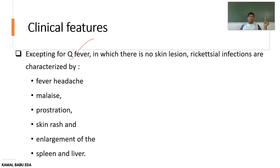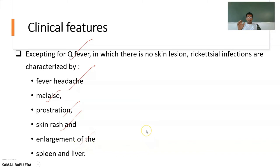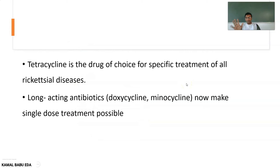Coming to the clinical features, for Q fever there will be no skin lesion. Rickettsial infections are mostly characterized by fever, headache, malaise, prostration, skin rash, and enlargement of the spleen and liver. For rickettsial diseases, tetracycline is the drug of choice.